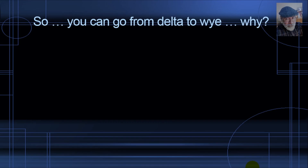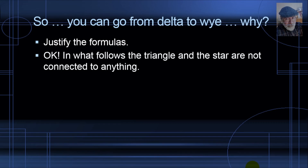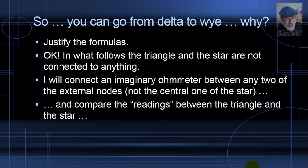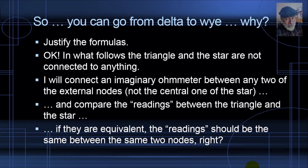But how come those formulas work? This part is for those of you who are truly hardcore. For the casual viewer, what you have seen already empowers you to transform deltas into Y's and vice versa. But if you want to know why those formulas work, stay tuned. Let's justify the formulas. In what follows, the triangle and the star are not connected to anything. I will connect an imaginary ohmmeter between any two of the external nodes — not the central node of the star — and compare the readings between the triangle and the star.